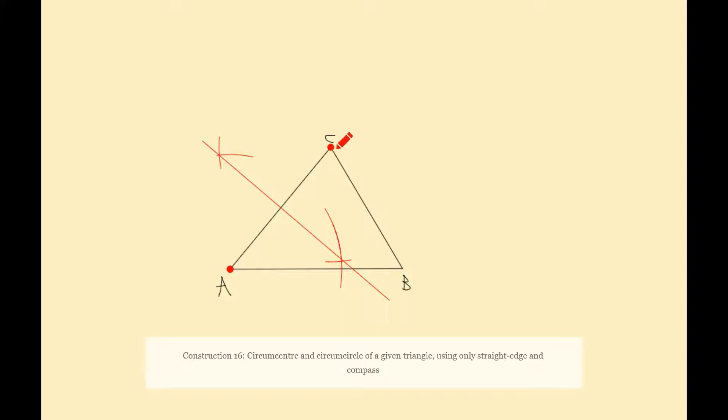Next thing I want to do is construct the perpendicular bisector of the side CB. Again you can pick AB if you want all you have to do is pick two sides. It doesn't matter which two sides. So I'm going to take out my compass again making sure that the radius remains the same. Okay so again don't change your compass radius from the last time.